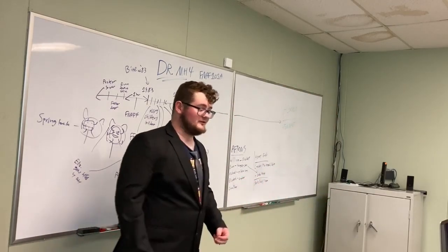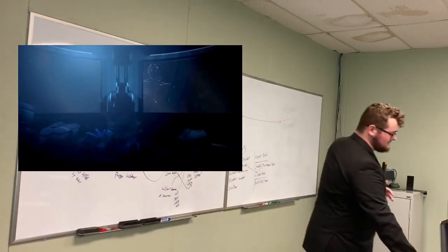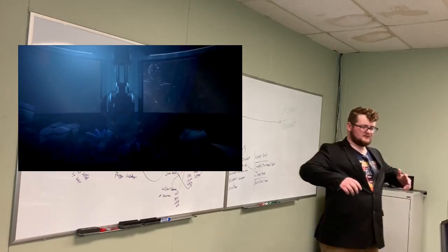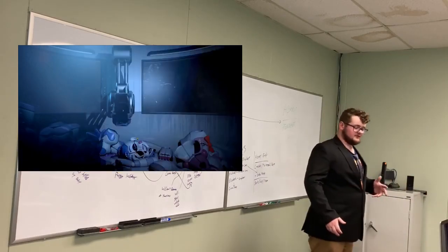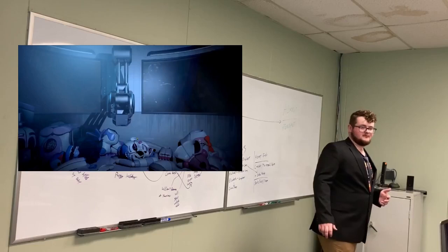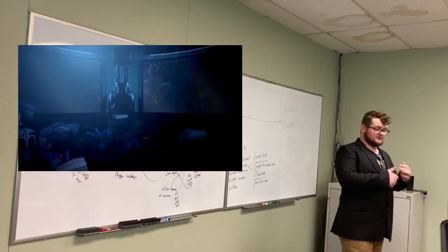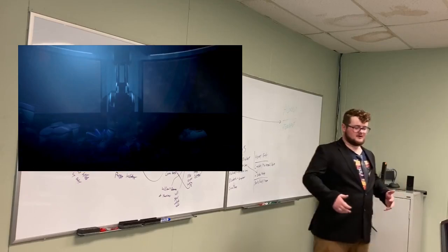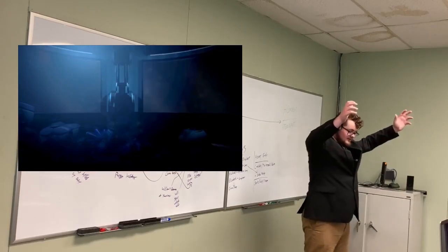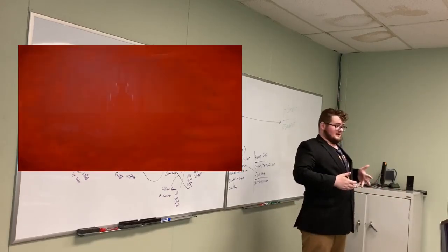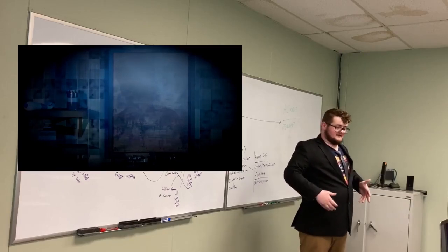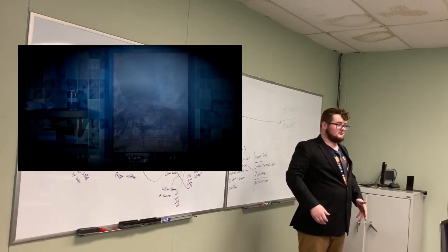Ennard, which is again those four animatronics, tricked Michael into going into the scooping room so he could scoop his guts out and use his corpse as a disguise to fit in with the human world. So, Ennard successfully scoops Mike, and Ennard escapes into the human world.